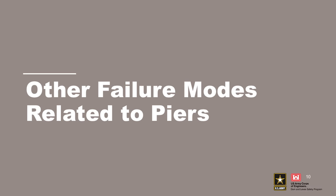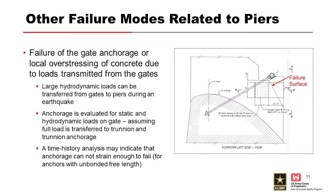Some other failure modes related to piers: gate anchorage or local overstressing of concrete are two other potential failure modes. Large hydrodynamic loads are transferred from the gates into the piers during an earthquake. Looking at the failure surface shown, you can get a reaction from the gate that is in the downstream direction but could also be angled downward, creating a shear plane that perhaps a pier wasn't evaluated for, without much reinforcing steel to resist it.